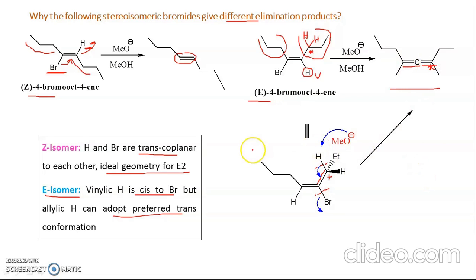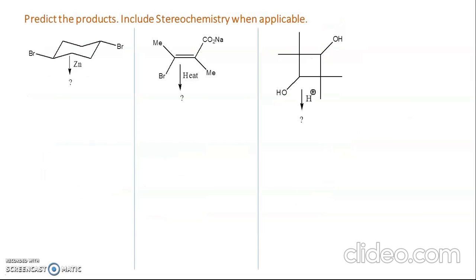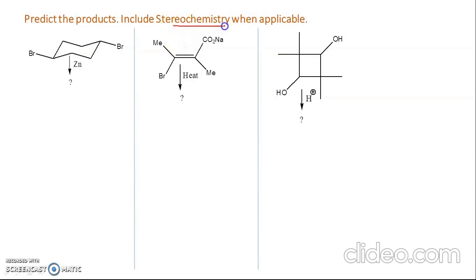The next problem asks us to predict the products — reaction conditions are given and we also have to include stereochemistry where applicable. The first molecule is trans-1,4-dibromocyclohexane. For a trans-1,4 disubstituted cyclohexane, both groups can be equatorial or both axial; the equatorial conformation is more stable. Even if the molecule picture is not given, you have to draw it with both bromines in the equatorial form before working out the mechanism.